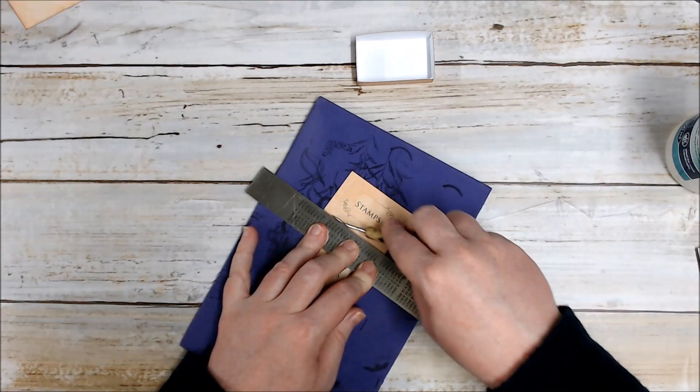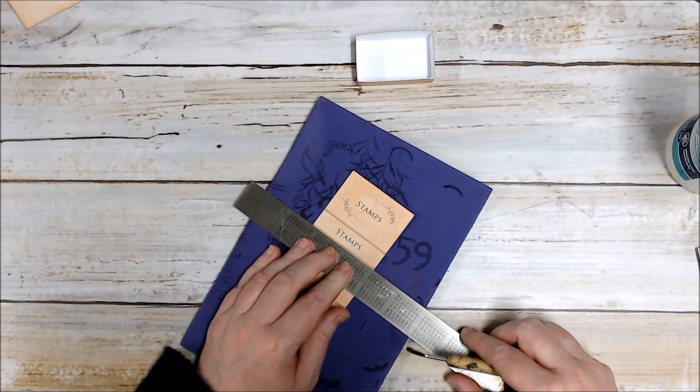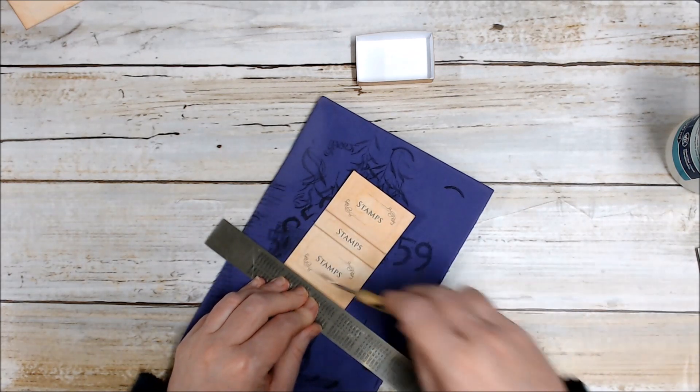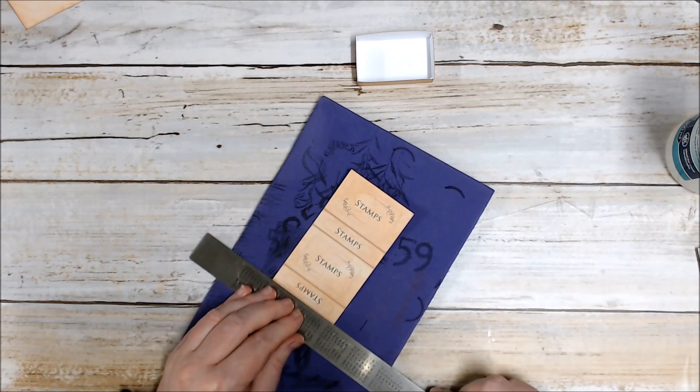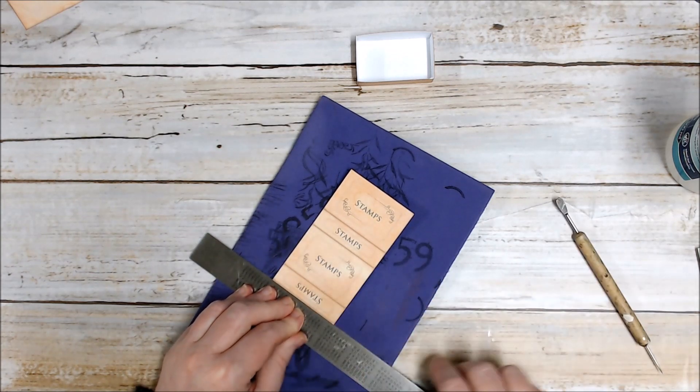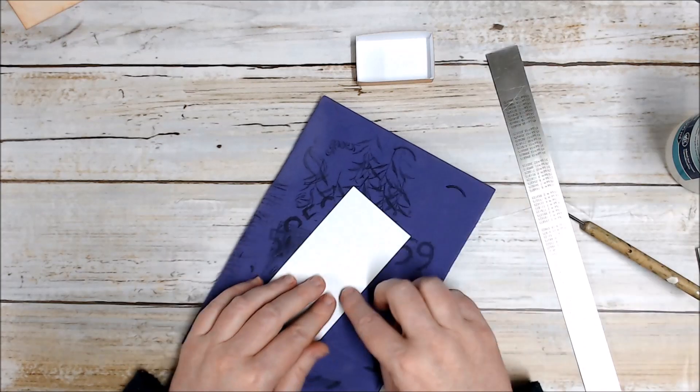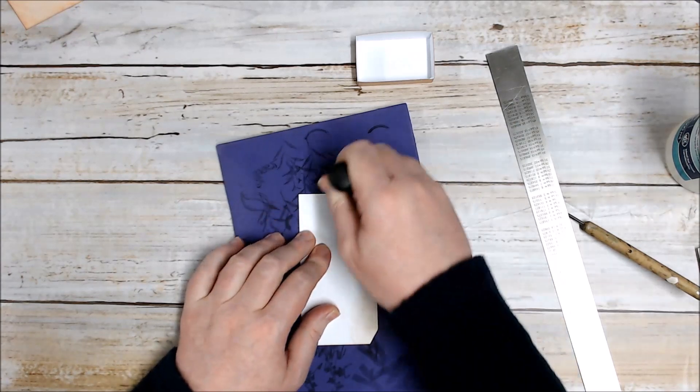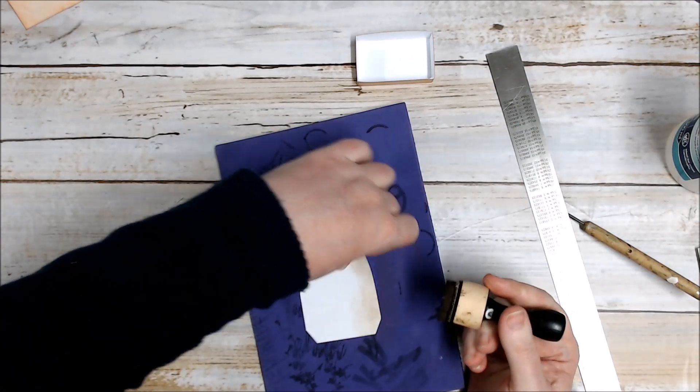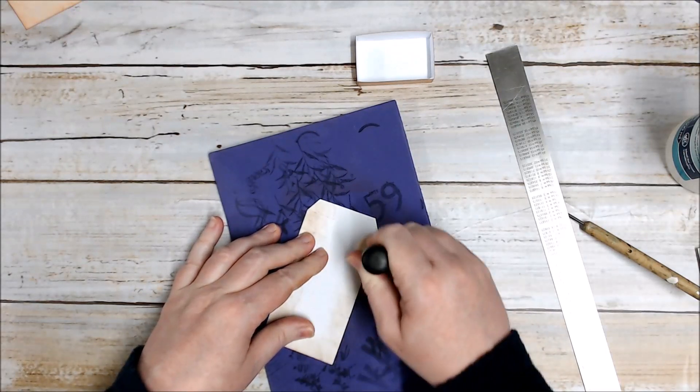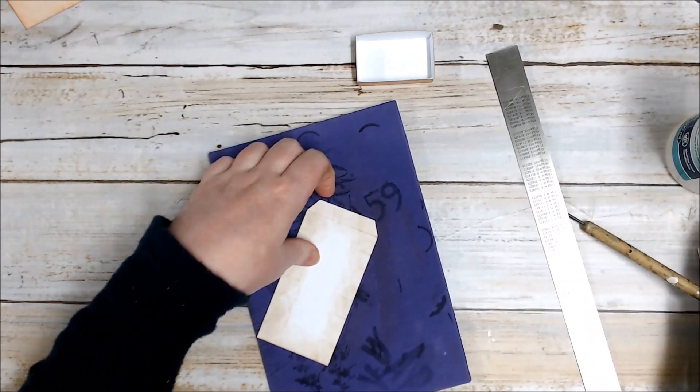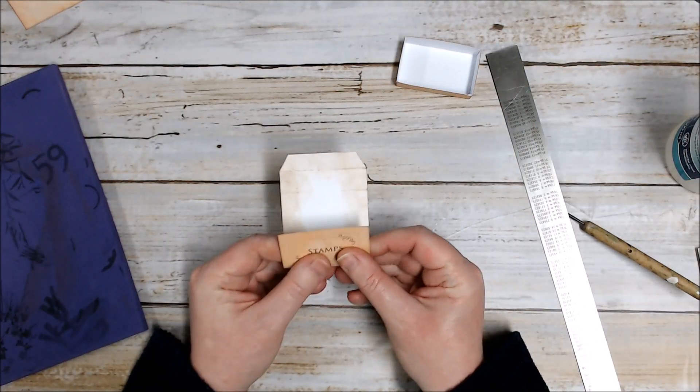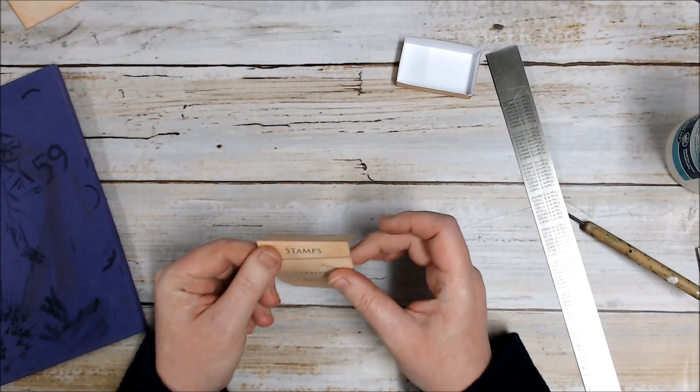Using a metal ruler - now you might want to run a little bit of ink along the inside if you haven't used tea dyed paper. You're not really going to see it so it doesn't matter what it looks like. It just takes that very stark whiteness away. So then I'll fold my matchbox sleeve along the creases that I've just made.